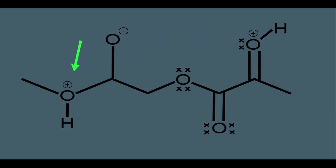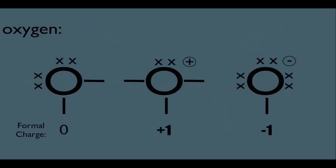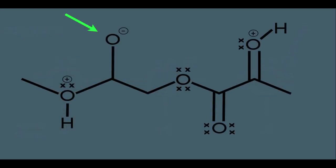Let's do the same analysis to this oxygen right here. It has a positive formal charge, so we know it makes a total of three bonds, which notice it is making here. That means it must also have its one lone pair of electrons right here. And lastly, this oxygen has a negative formal charge. Remember, if oxygen has a negative formal charge, it means it makes one bond and has three lone pairs. Going back, it definitely has one bond below to the carbon, therefore it must have three lone pairs of electrons.